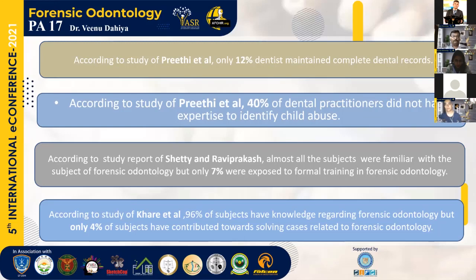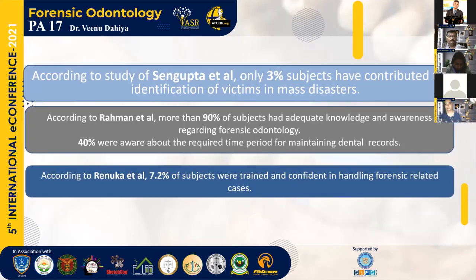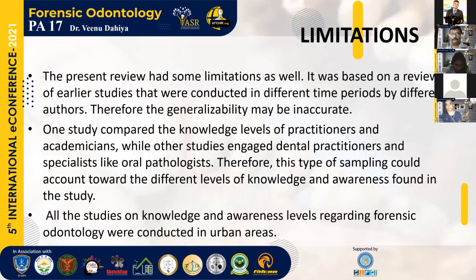Key data extracted: according to Kheretol, only 12% of dentists were maintaining complete dental records, and 40% of dental practitioners did not have expertise to identify child abuse. According to Shetty and Ravi Prakash, only 7% were exposed to formal training in forensic odontology, and according to Kheretol 96% had knowledge but only 4% contributed to solving forensic cases. According to Sengupta et al., only 3% contributed to identification of victims in mass disasters. According to Rahman, 90% had adequate knowledge but only 40% were aware of the required time period for maintaining dental records. According to Renuka, only 7.2% of subjects were trained and confident in handling forensic-related cases.